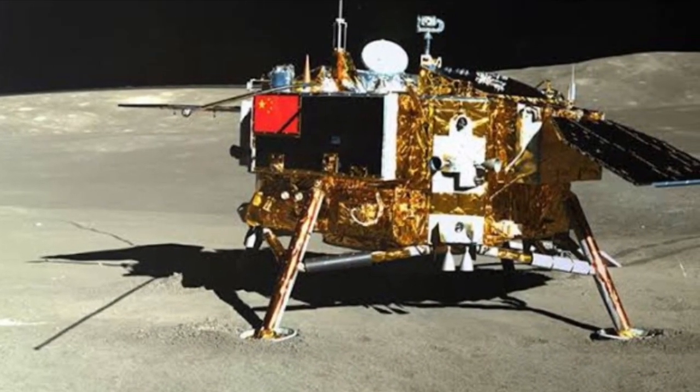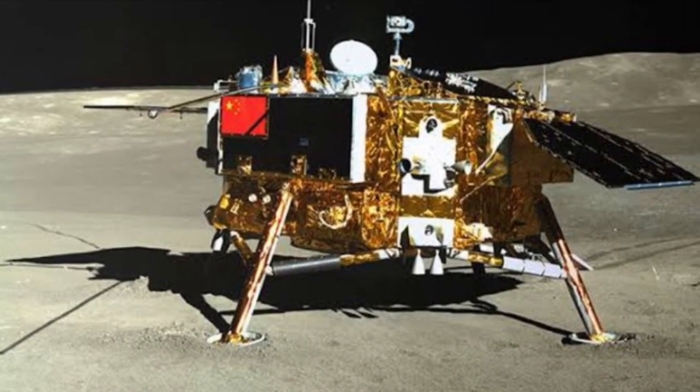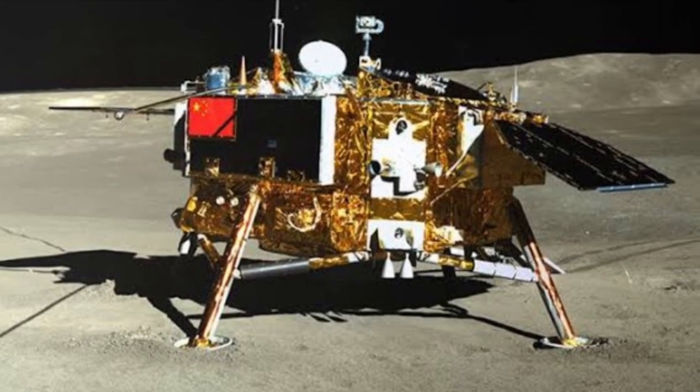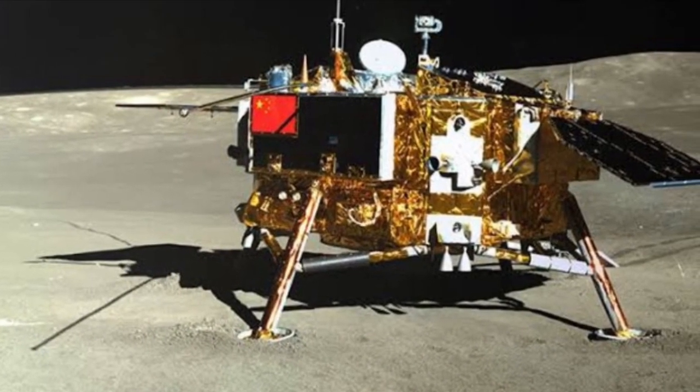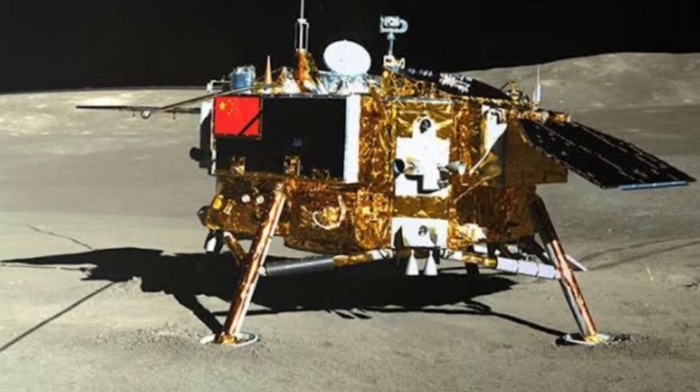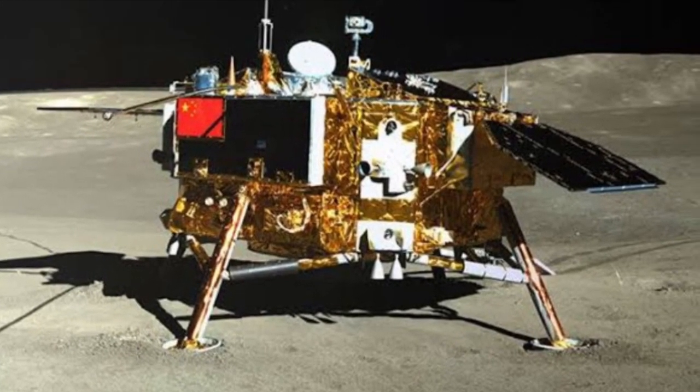ISRO has said that the orbiter has located Vikram lander on the lunar surface and clicked a thermal image, but there is no communication yet.